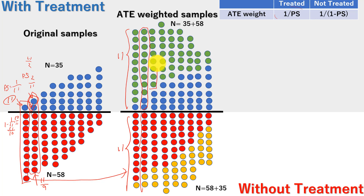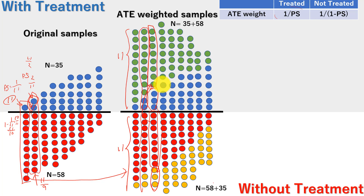You may notice that the extra dots on treated are actually from untreated data, and extra dots on untreated are from treated data. By doing this repeatedly, the number of treated and untreated patients becomes the same. However, the total sample size gets doubled — this is what ATE weight does.